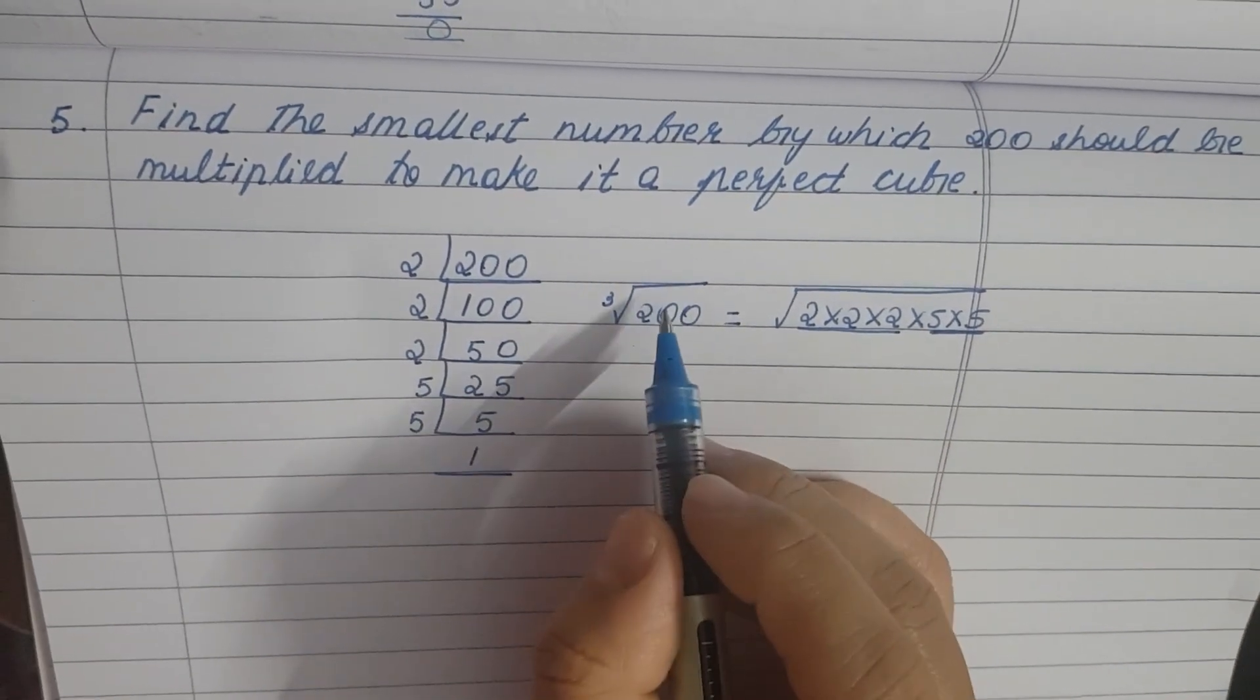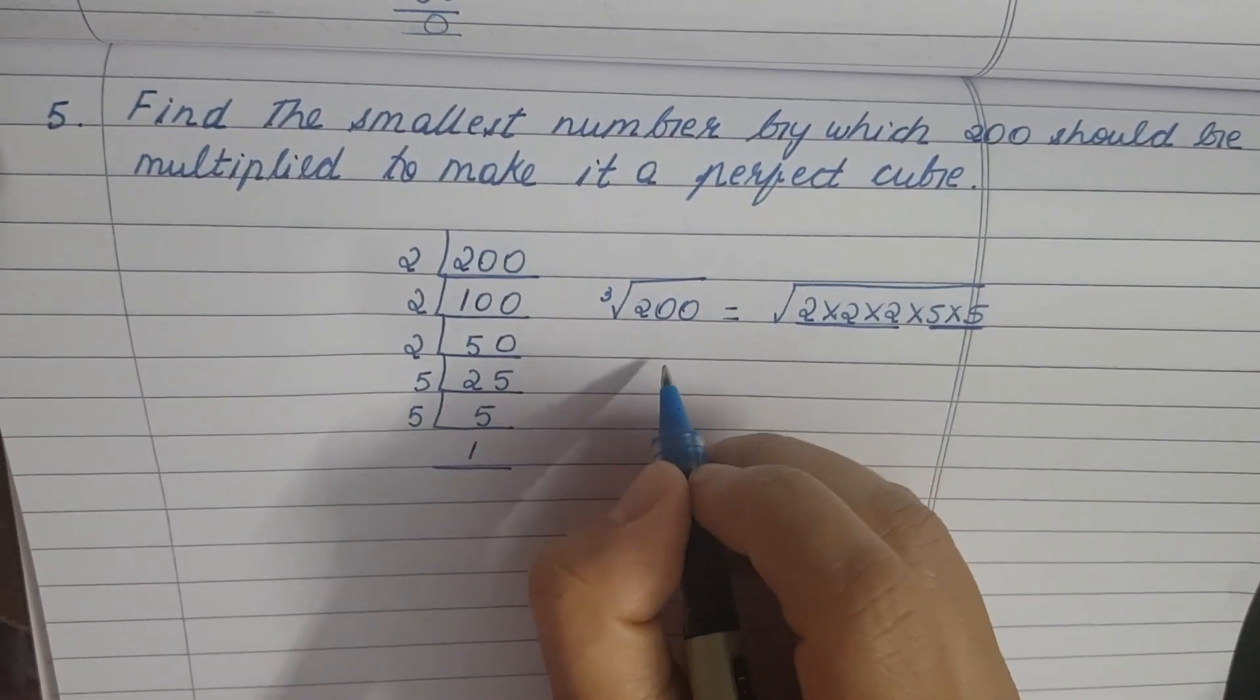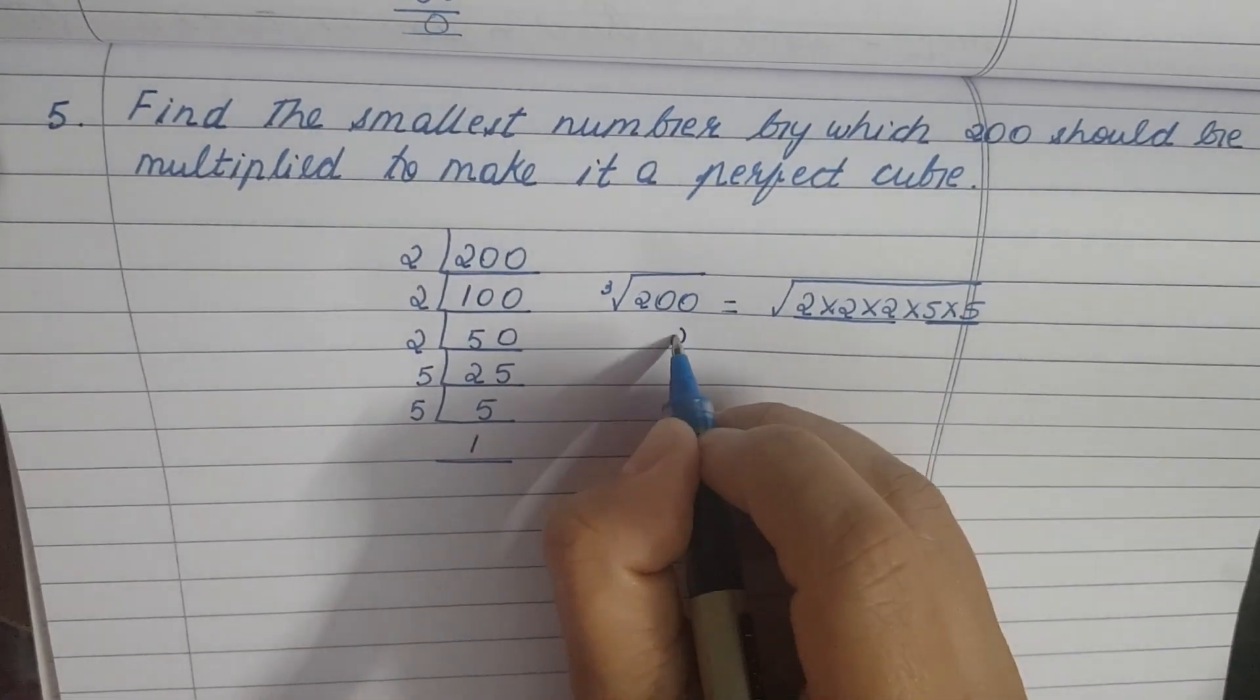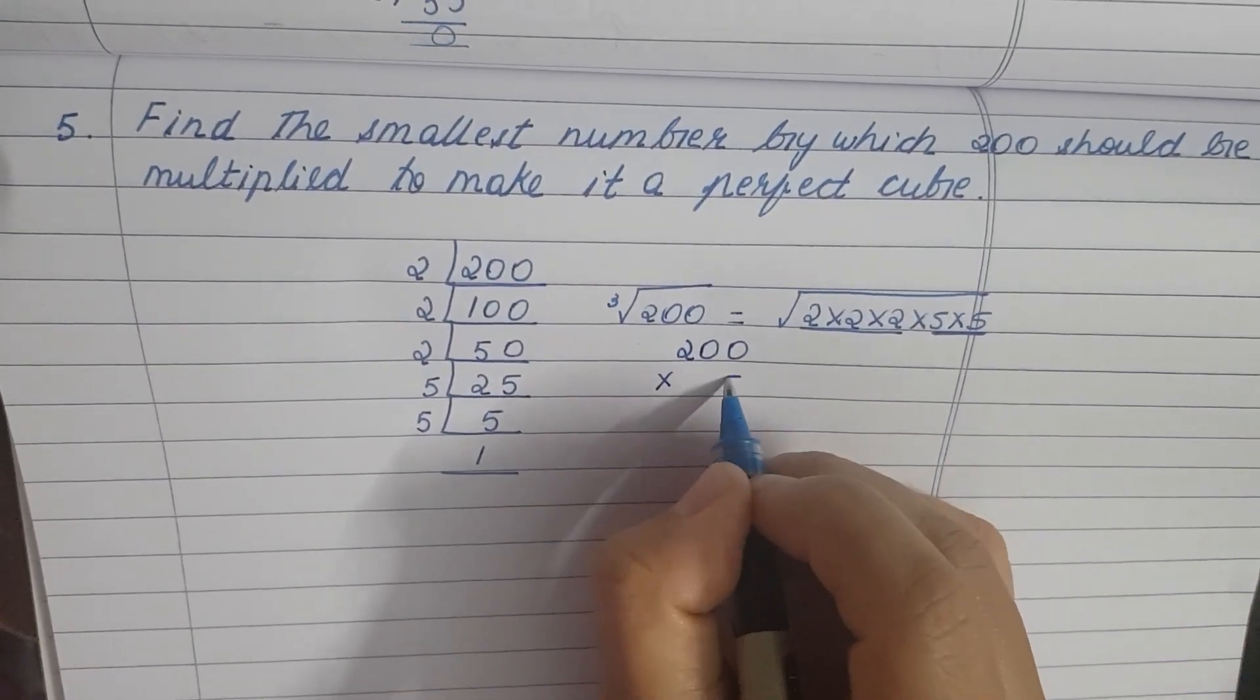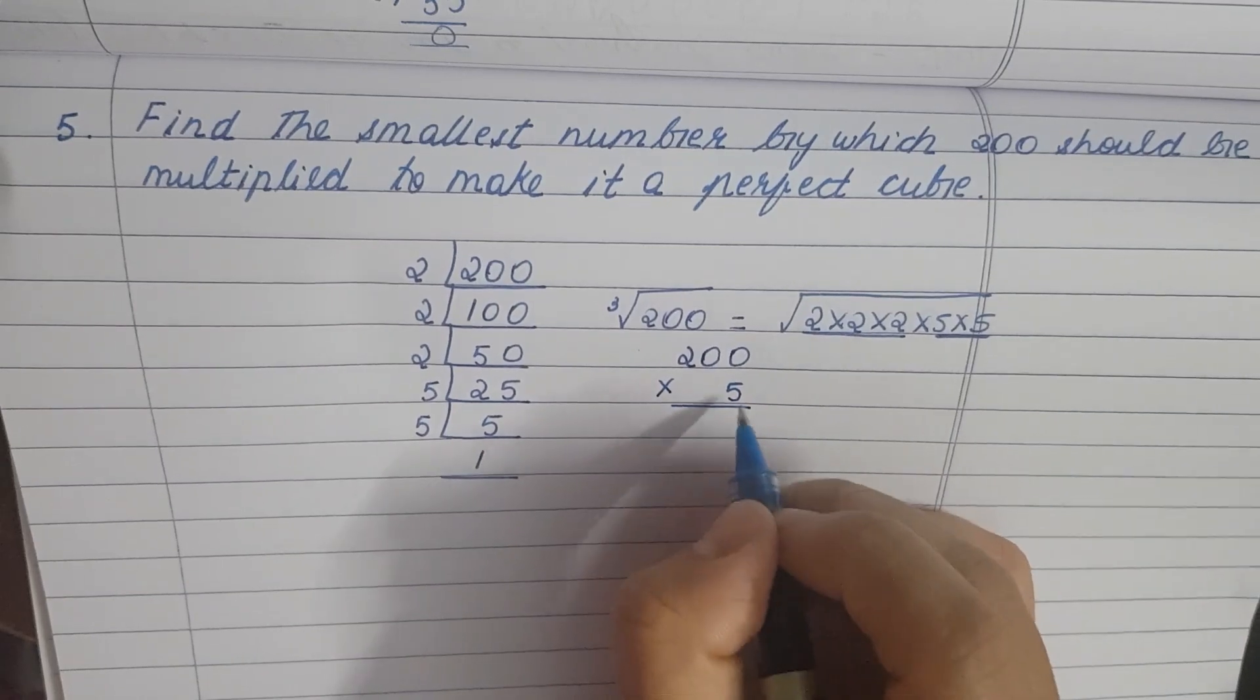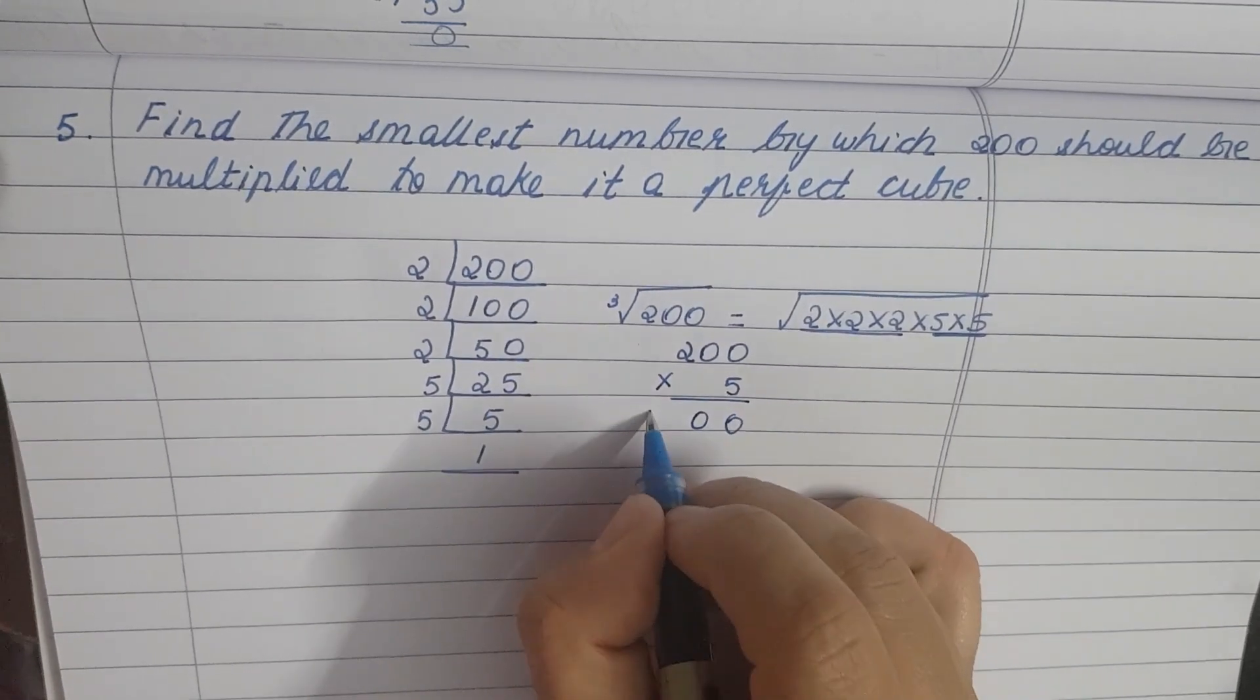we will multiply it with the missing 5. So 200 times 5: 0 times 5 is 0, 0 times 5 is 0, 2 times 5 is 10.